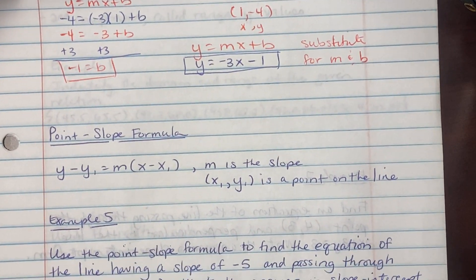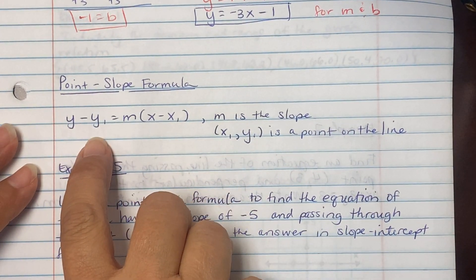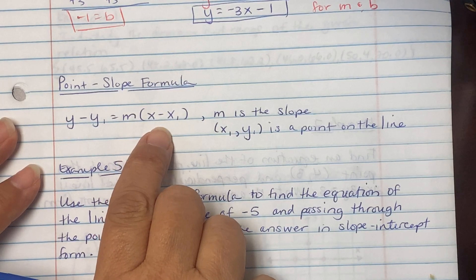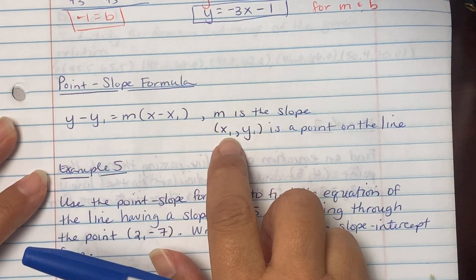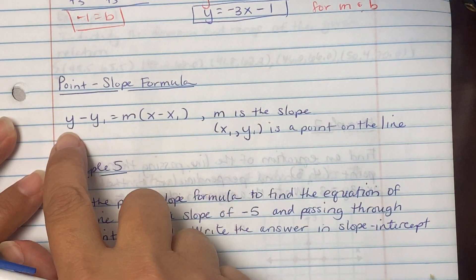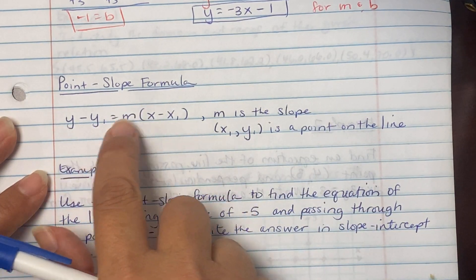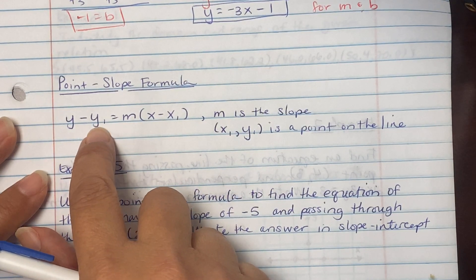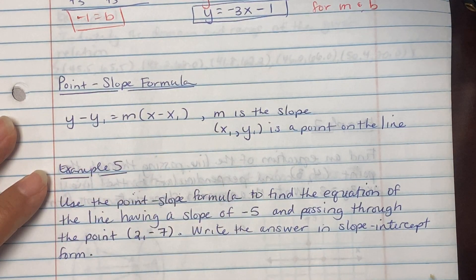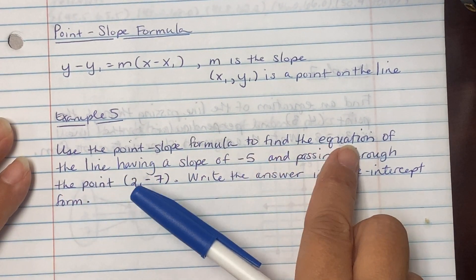Point-slope form is y minus y1 equals m times (x minus x1), where m is the slope and (x1, y1) is a point on the line. Notice there are two y's and two x's — you only substitute values for y1, x1, and m.